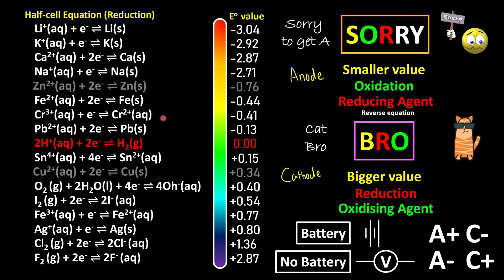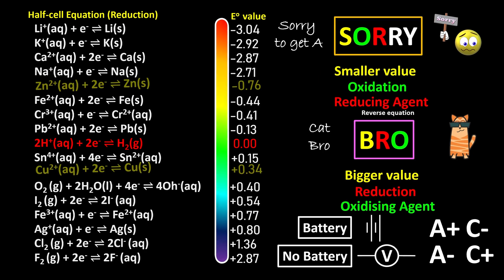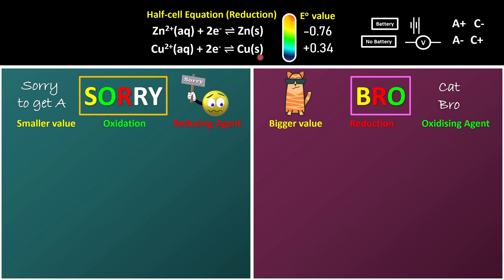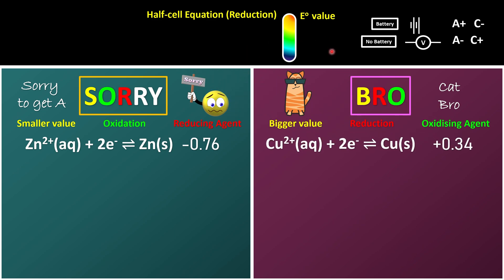So let's have an example. We will look at zinc and copper, and we're going to compare the E naught value and see what happened. As we can see here, zinc has a smaller E naught value. Meanwhile, copper has a bigger E naught value.